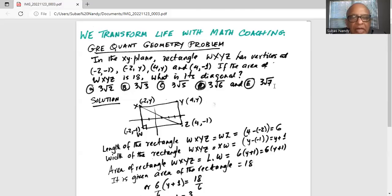The length of the rectangle WXYZ is WZ. So what is the distance, what is the length of the segment WZ? It is 4 minus (-2), or 4 plus 2, which is 6.